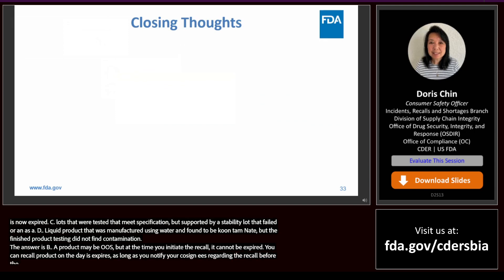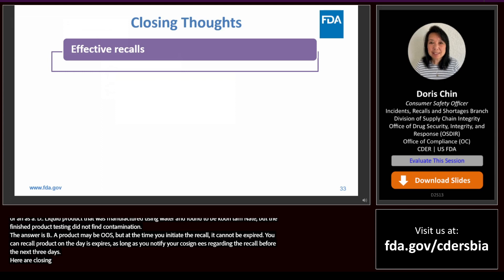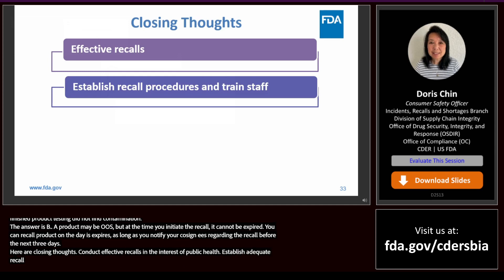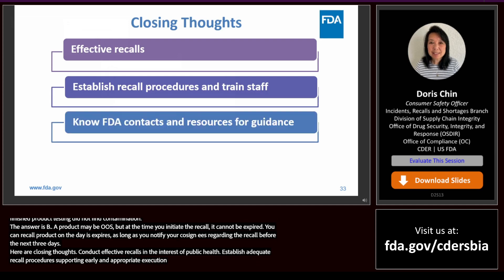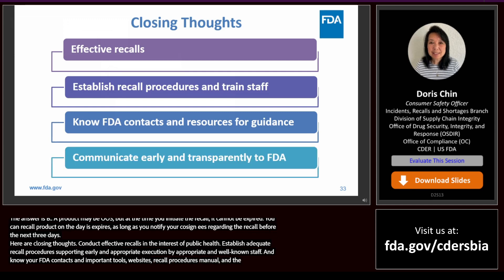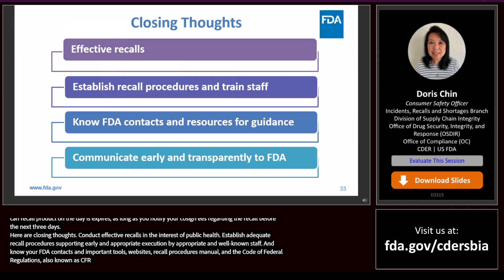Here are some closing thoughts. Conduct effective recalls in the interest of public health. Establish adequate recall procedures that support early and prompt execution of appropriate market action by well-trained staff. Know your FDA contacts and important tools such as FDA guidance and websites, the recalls procedures manual, and the Code of Federal Regulations. Talk to FDA early and transparently. Take these four major points back to your team to ensure your firm will be prepared in the event you ever need to recall.